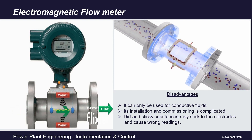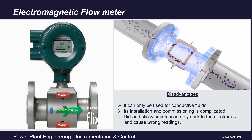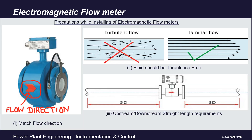Installation and commissioning is complicated, so a few precautions must be taken. First, check the flow direction — check the arrow sign on the flow meter. As seen in the figure, there is a mark on the flow meter: the tail of the arrow is the upstream side and the head is the downstream side. The flow direction shown on the flow meter must match the process flow direction; if connected in reverse, readings will not be accurate. Second, the fluid should be turbulence-free — it works best with laminar flow.